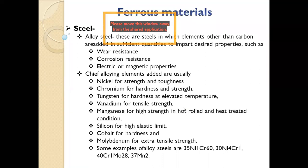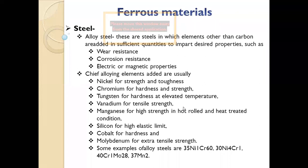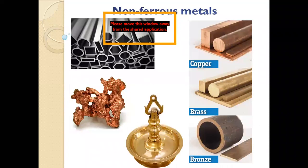Vanadium is used for more tensile strength and for hot rolling and heat treatment applications. Manganese is used for high strength during heat treatment; silicon for a high elastic limit; cobalt for hardness; and molybdenum for extra strength. Sometimes two or three alloying elements are combined to get different combinations of properties.